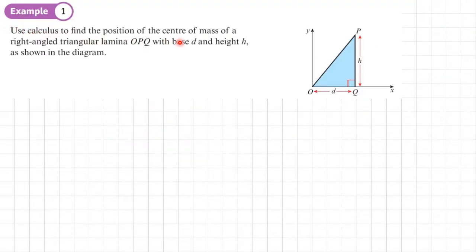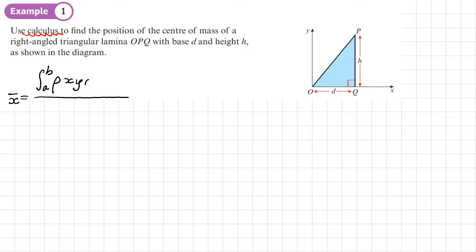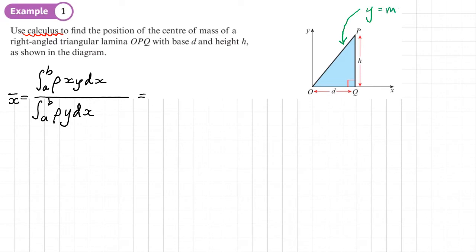Example 1: use calculus to find the centre of mass of a right-angle triangle OPQ with base D and height H. Since the question says 'use calculus,' we don't use the standard triangle result. Starting with the formula for x-bar, the limits are zero to D, and y equals the equation of the bounding line. The gradient is H over D and the intercept is zero, so y = (H/D)x.